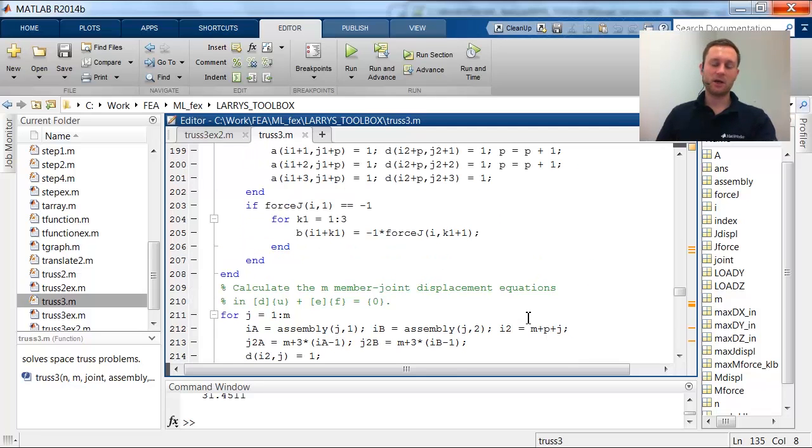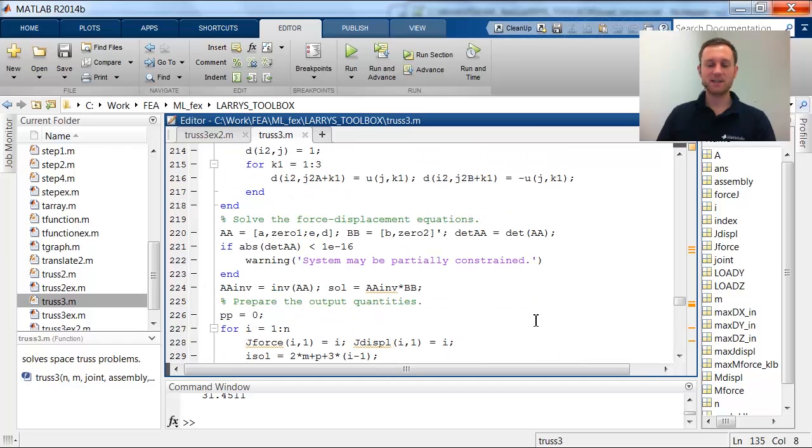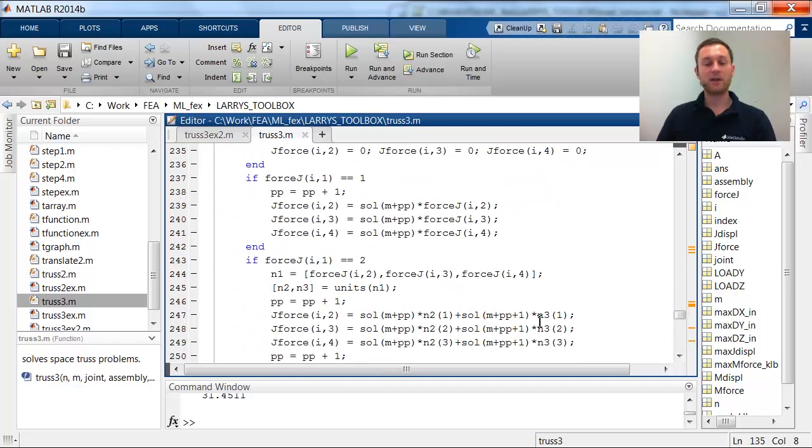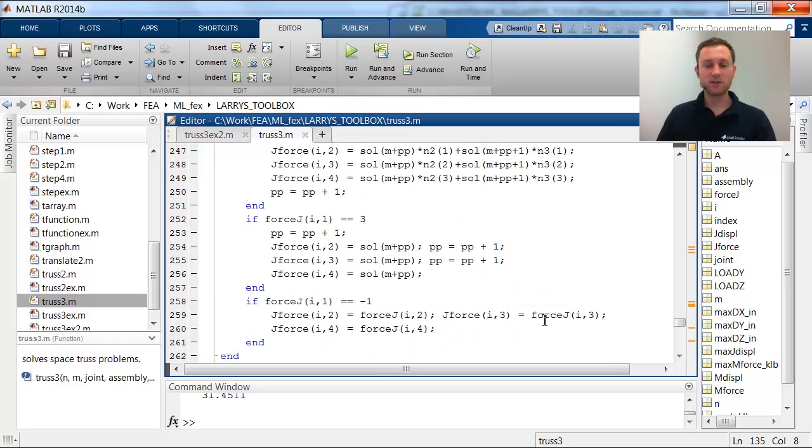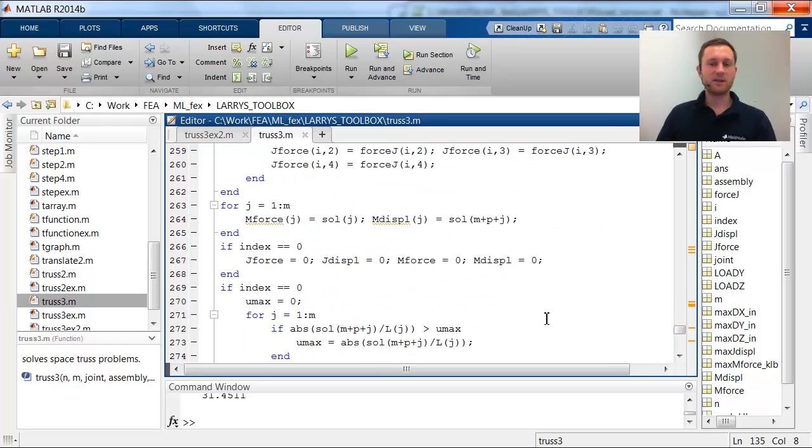And what he is now doing is setting up the system equations and at the end just solving the system. So within less than, we are line 200, a lot of that is comments. I would say in less than 100 lines you can get the direct stiffness method and code it and then use it and work with it. But as I said, it's no need to start from scratch with coding. Just go to the MATLAB file exchange, all is open source and you can use it right away.